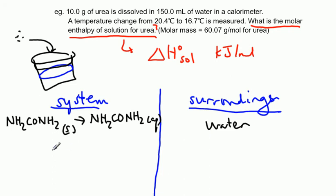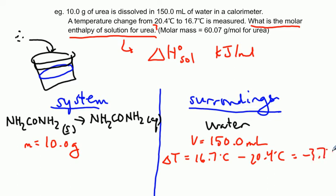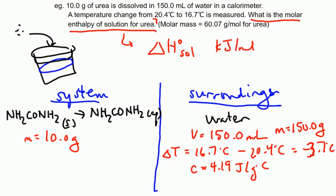So information that we know, we have 10.0 grams of urea that's undergoing the transformation. The volume of water we have is 150 milliliters. And we know our temperature change for water, 16.7 degrees Celsius minus 20.4 degrees Celsius equals negative 3.7 degrees Celsius. So we know the volume of water, we know the temperature change. We're going to assume that the density of water is 1. So we also know that the mass is 150 grams of water. We also know a C value for water, 4.19 joules per gram degrees Celsius.